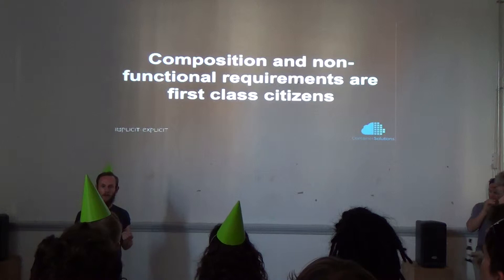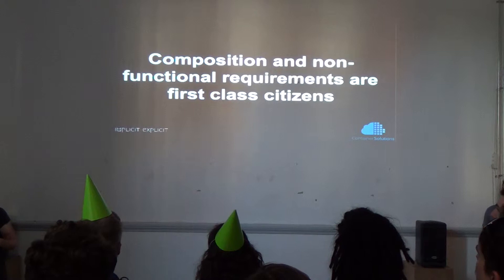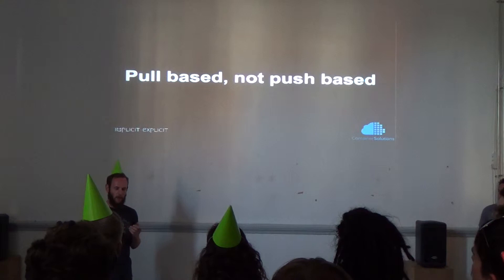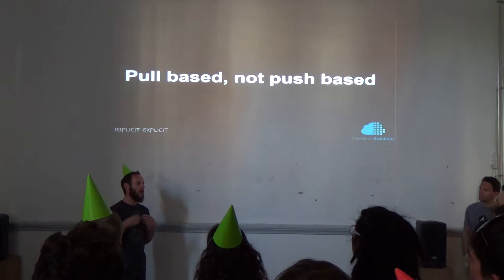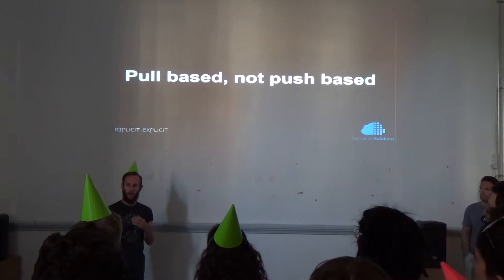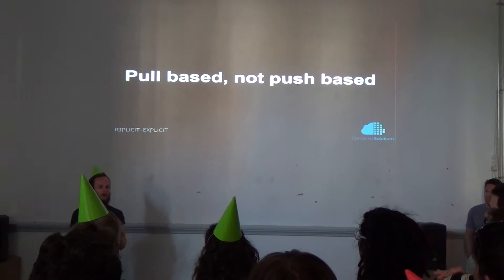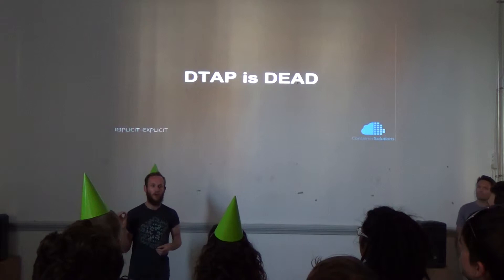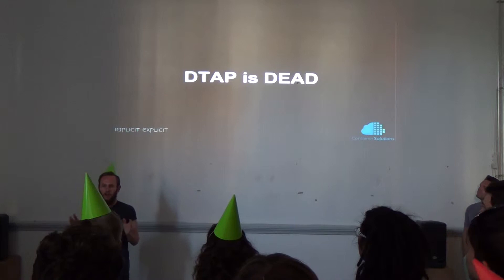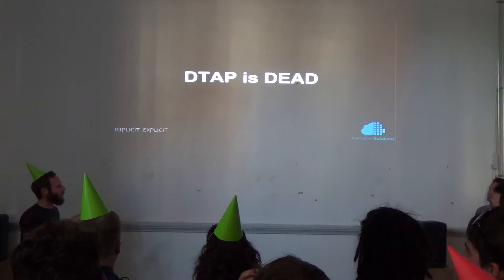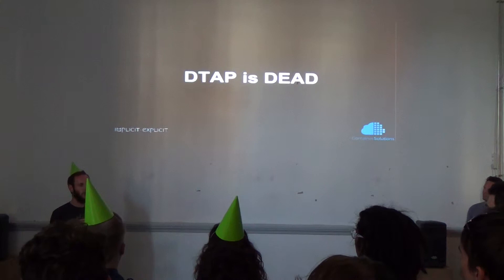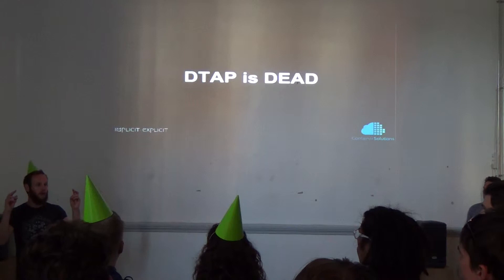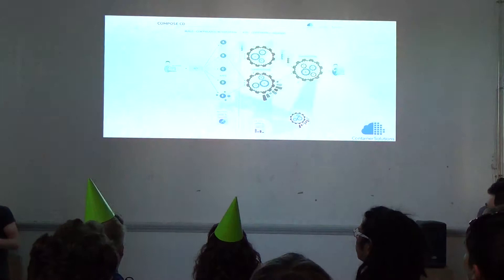The idea of Compose CD is that composition and non-functional requirements are first-class citizens, not things you bolt on afterwards. The approach is pull-based. Whereas with Jenkins, for example, the way all CI tools look is: developer commits code, pushes to GitHub, and then it gets pushed, pushed, pushed. What we're saying is, from the image repository onwards, we're going to pull it towards where you want it, which is the users. What it effectively means is that DTAP is dead. DTAP is just an arbitrary construction of VMs or environments. What you actually want to do is check that the subcomponents of your compositions of services are working together.